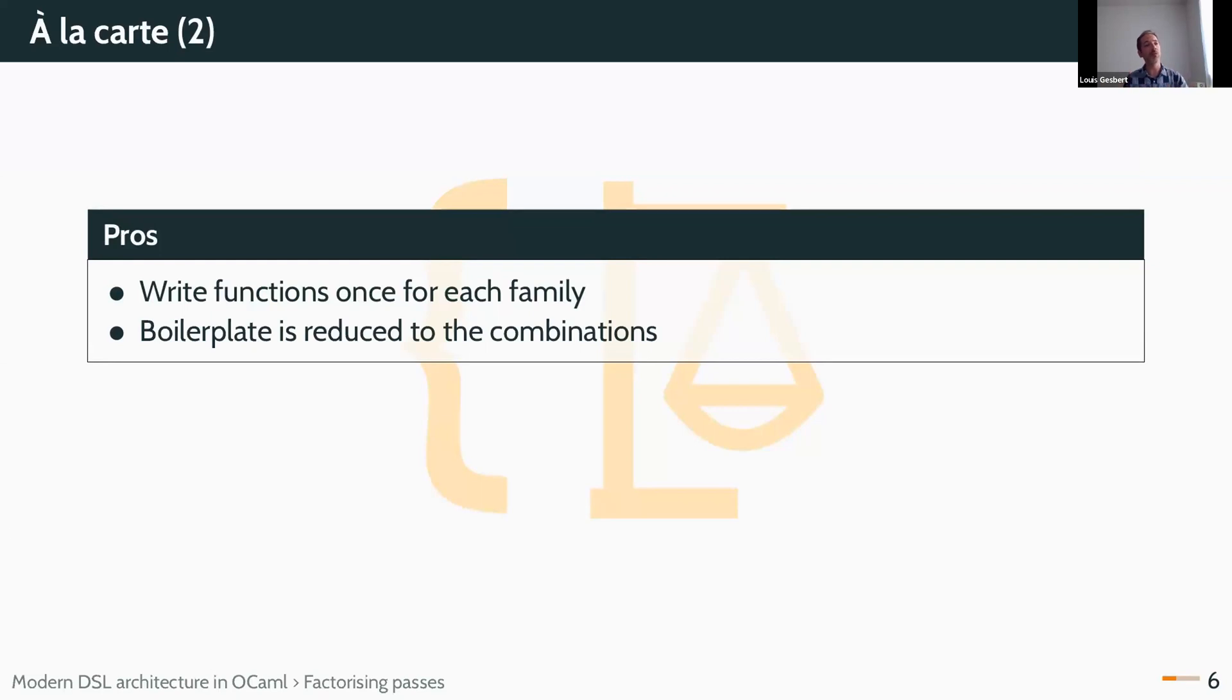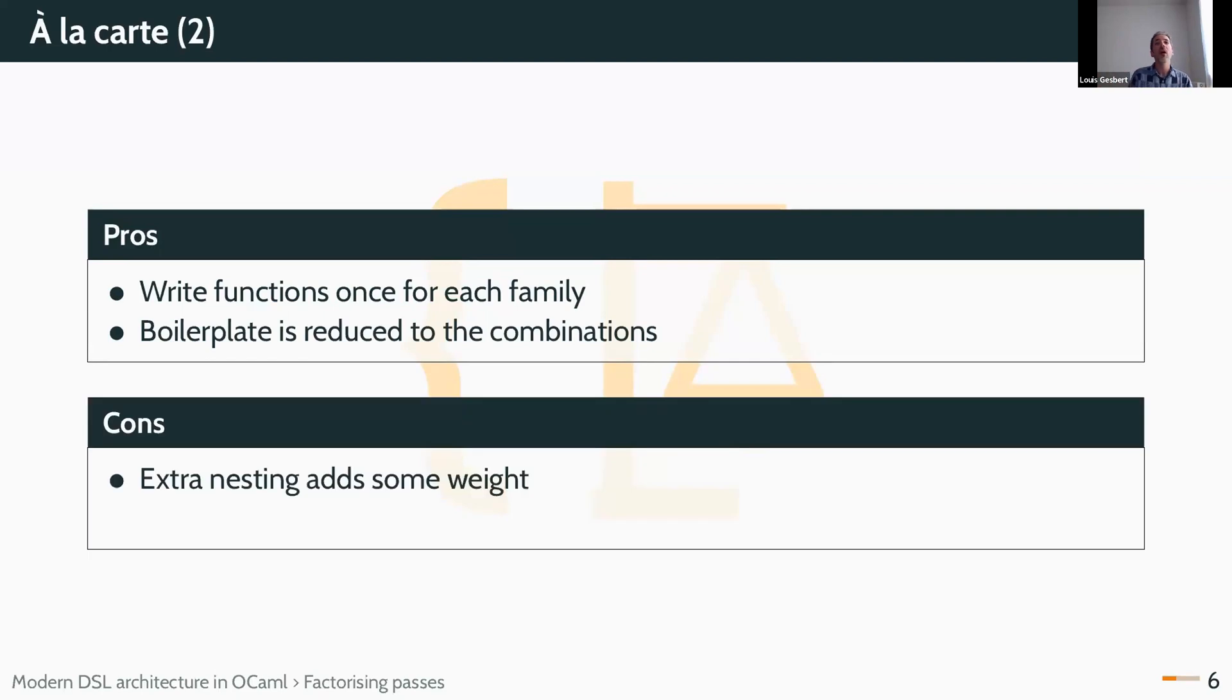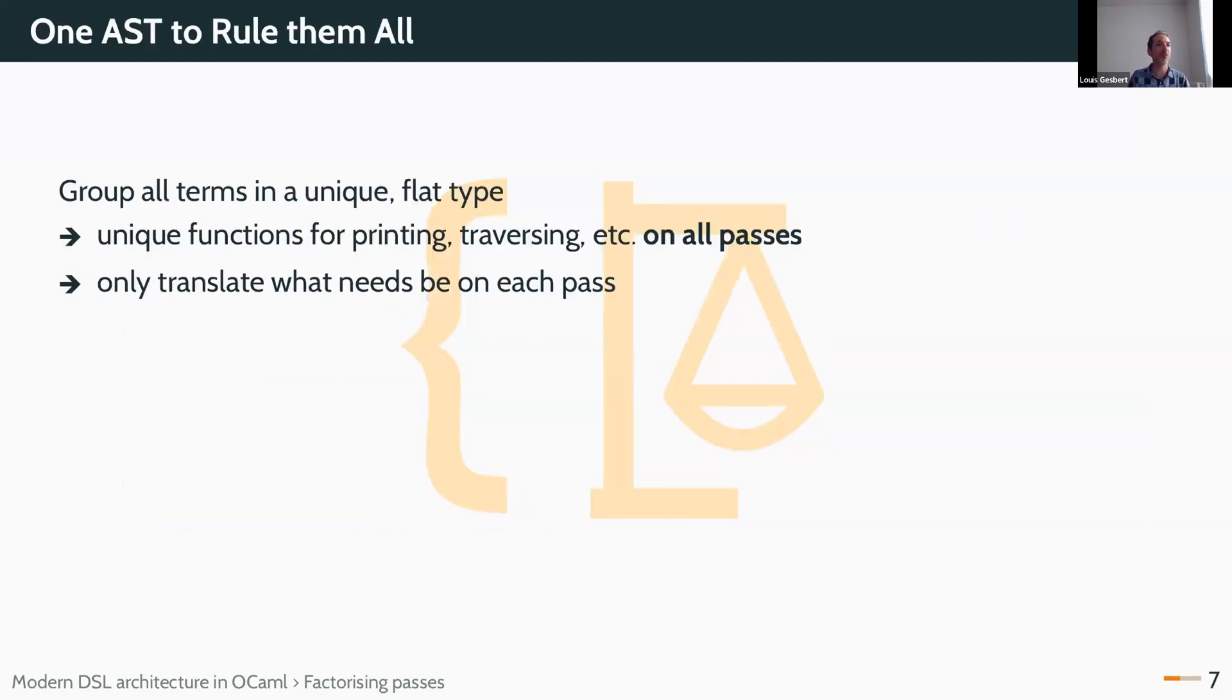For each of your ASTs, you will write different polymorphic variants. And you will have to combine the printers, for example, for different ones, but it will be much lighter. It still adds some weight. For example, when you pattern match, everything is one step deeper. So it's not perfect, and still has some boilerplate left. We want something more lightweight than this.